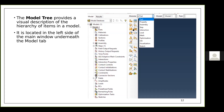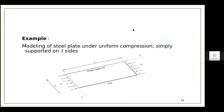I will be explaining the modeling of steel structures using a very simple example — a steel plate subjected to uniform compression. The plate is simply supported on three sides and free along one longitudinal edge. It is a rectangular plate of width B and length L. I built the model of this plate to explain the modeling techniques.